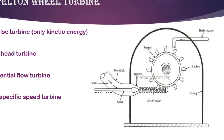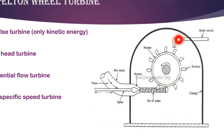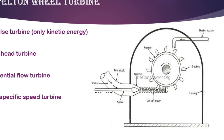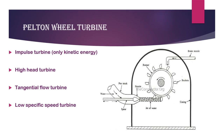A casing is provided around the nozzle to avoid splashing of water — otherwise it causes energy loss and accidents. A braking nozzle is used: in the jet of water inlet, the runner rotates. If we want to stop, we direct a jet in the opposite direction to resist rotation, and the turbine stops. That is the braking nozzle or brake jet.